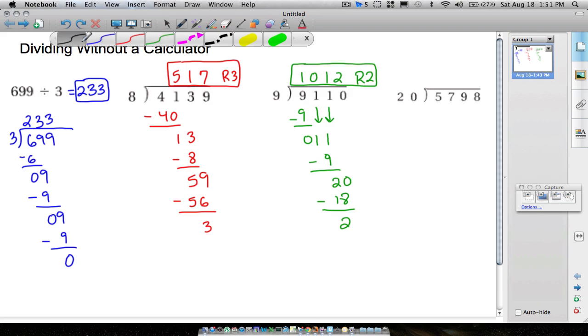And now this last one. We have a two-digit number on the outside. So we want to look at at least two digits over here. So 20 definitely won't go into 5. That's why you want to go ahead and look at at least two digits. 20 goes into 57 two times, because 2 times 20 is 40. We subtract, and we have 17 left over.